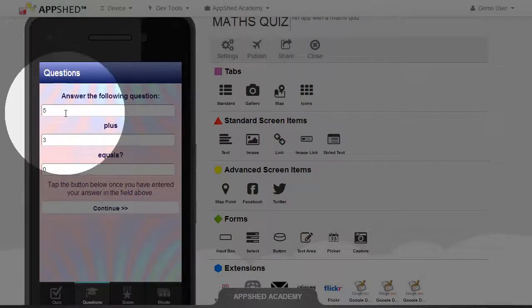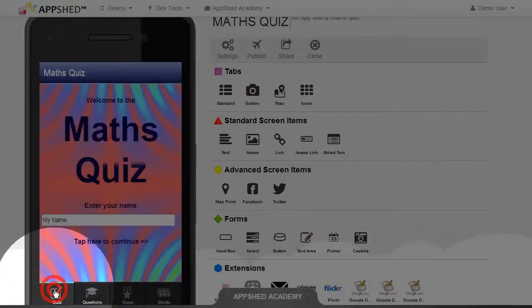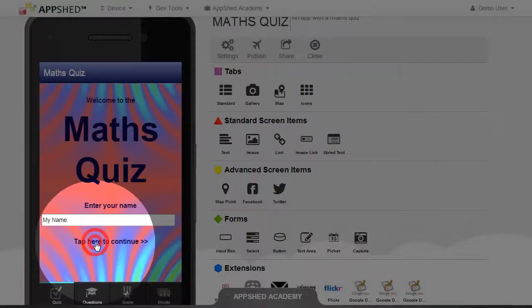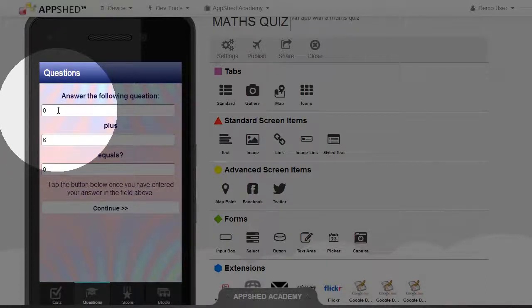It's now set number 1 to 5, and number 2 to 3. Let's go back and try that again. Now it's set to two different numbers, 0 and 6. That's great.